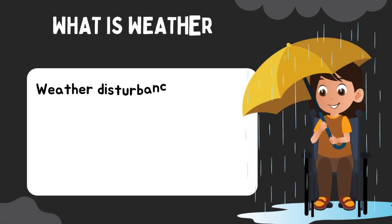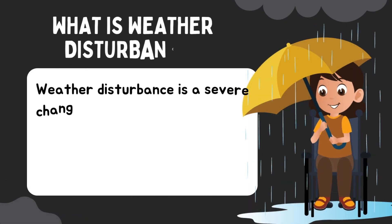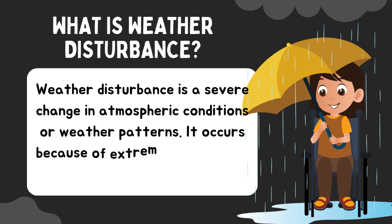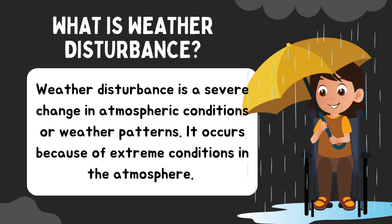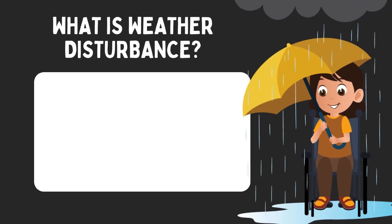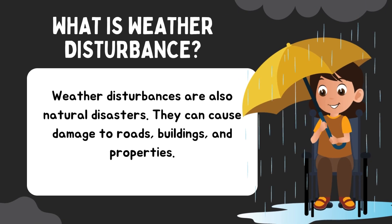Weather disturbance is a severe change in atmospheric conditions or weather patterns. It occurs because of extreme conditions in the atmosphere. Weather disturbances are also natural disasters. They can cause damage to roads, buildings, and properties.